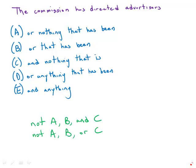First of all, we have the double negative. These elements are in parallel: it does not contain colors or flavor additives, it does not contain chemical preservatives, and does not contain nothing. That would be incorrect. So we'd need 'anything' or something positive. The 'nothing' is incorrect — it's a double negative — so we're going to get rid of that.